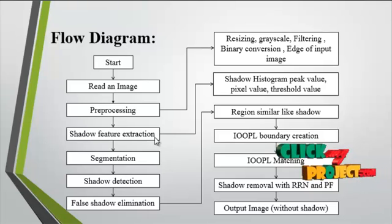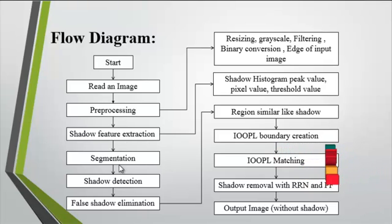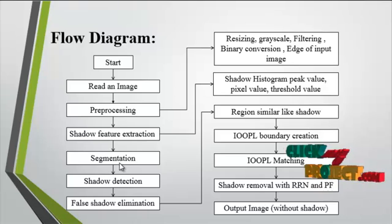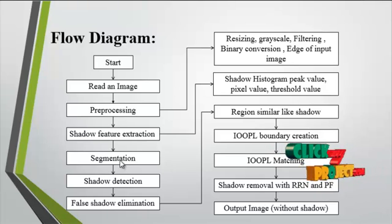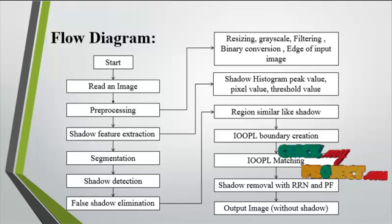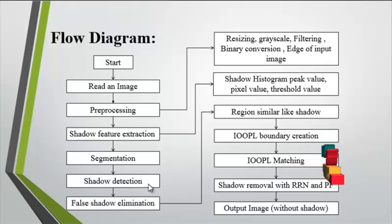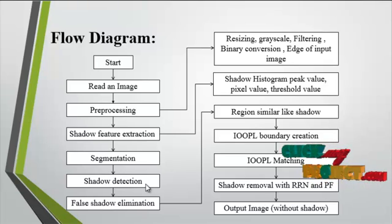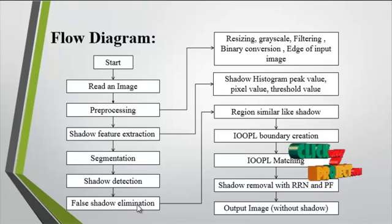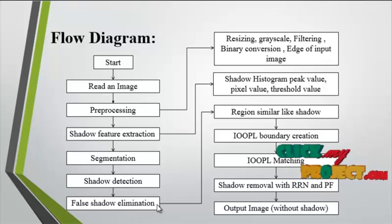After shadow features are extracted, segmentation is carried out. In segmentation, only the shadow region is segmented and other backgrounds are eliminated. Then the blobs of the segmented shadows are detected for shadow detection. False shadow illumination is then used to eliminate regions that are similar to shadow regions but are not actual shadows.